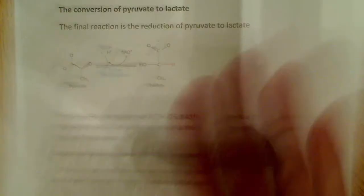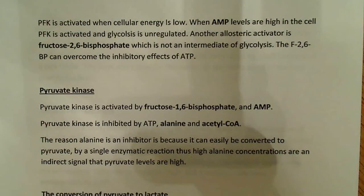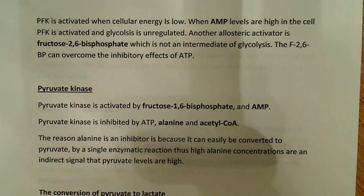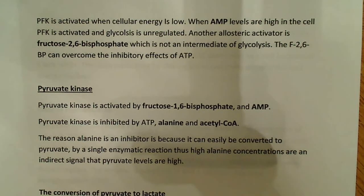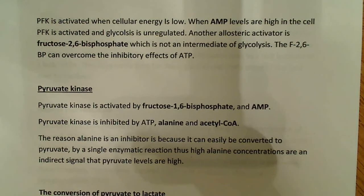PFK is activated when cellular energy is low—when AMP levels are high, PFK is activated. That's perfectly intuitive: energy levels are low, so I want to up-regulate glycolysis and start making ATP. Another allosteric activator is fructose-2,6-bisphosphate, which is different from what we've seen before and extremely important. It's not an intermediate in glycolysis, but interestingly it can actually overcome the effects of ATP inhibition—so even if ATP is inhibiting, fructose-2,6-bisphosphate can push the reaction forward.